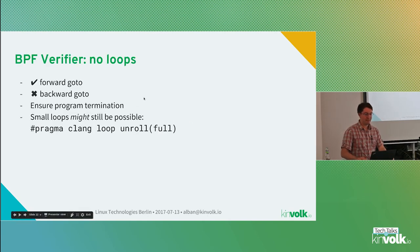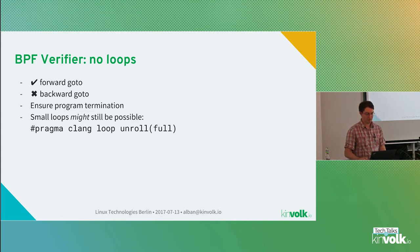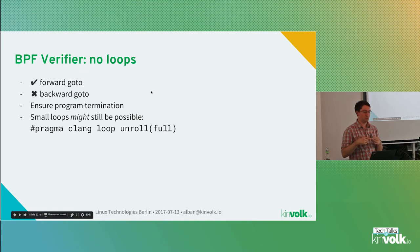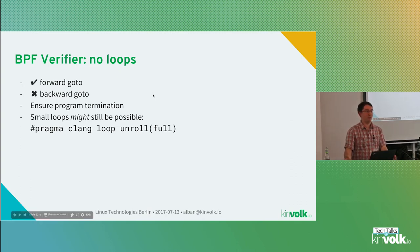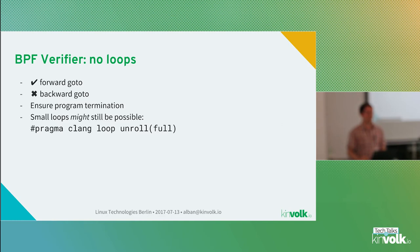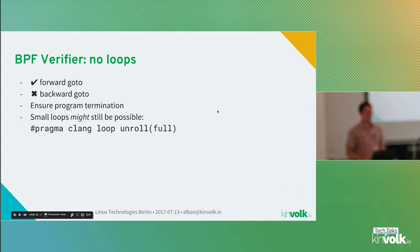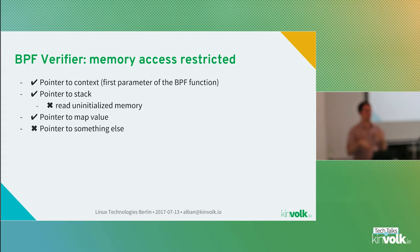Another component is the BPF verifier. Its goal is to make sure the program doesn't do anything bad or dangerous. It verifies that you don't do any loops or jump backwards — you can jump forward, but not backward — ensuring the program terminates. This makes things more complicated to write because when you write code in C without loops, that's not so convenient. It might still be possible to do some small loops if the compiler unrolls them, but it's still not so practical.